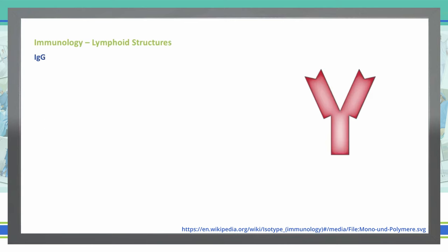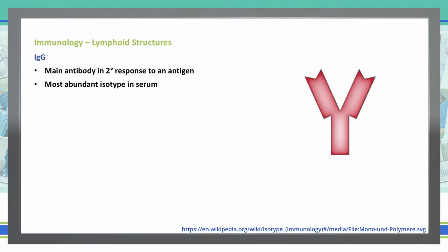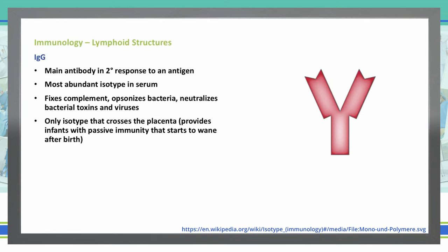Let's talk about IgG. From the previous picture, it's that red monomer. It is the main antibody in the secondary response to an antigen, and it is the most abundant isotype in blood serum. It fixes complement, opsonizes bacteria, and neutralizes bacterial toxins as well as viruses. It is also the only isotype that will cross the placenta, which gives it the ability to provide infants with passive immunity that starts to wane after birth. IgG is the only one that crosses the placenta.